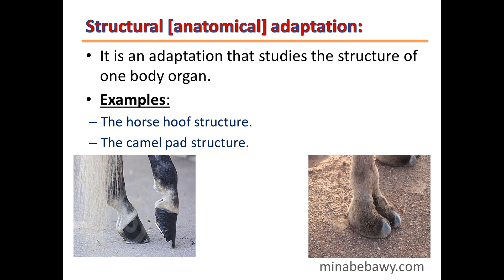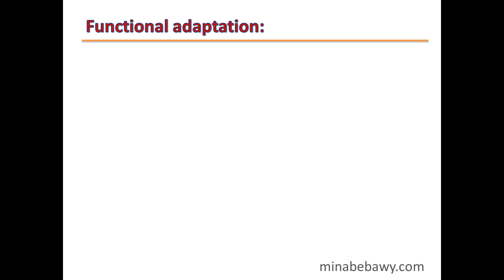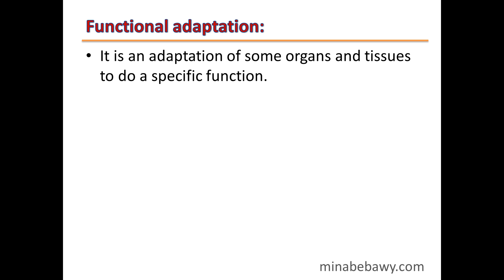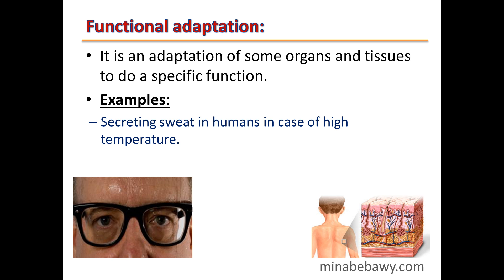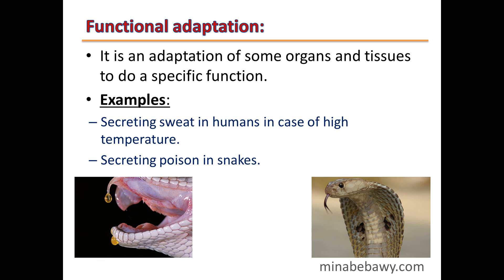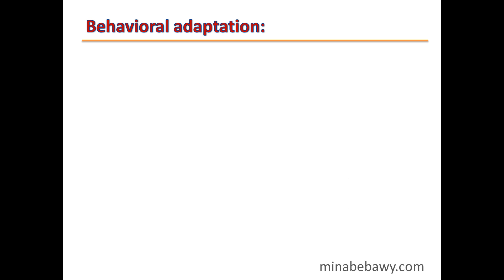Functional Adaptation is an adaptation of some organs and tissues to perform a specific function. Examples include secreting sweat in humans in cases of high temperature, and secreting poison in snakes.